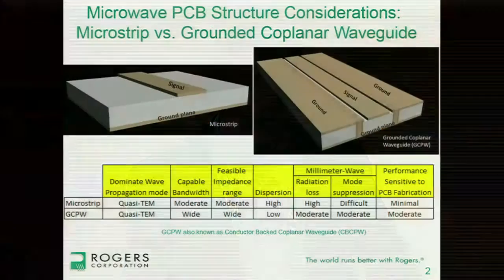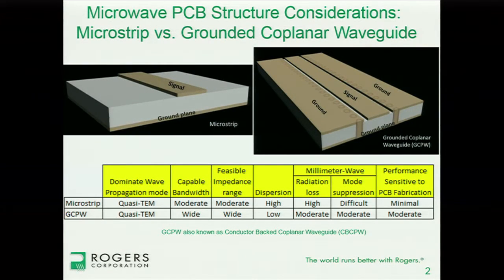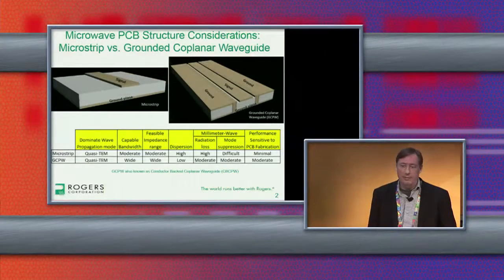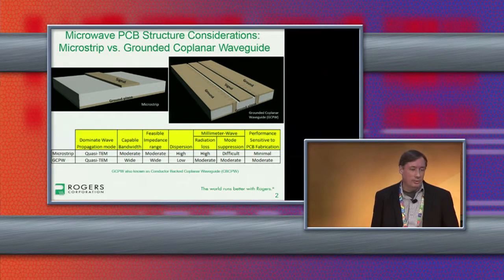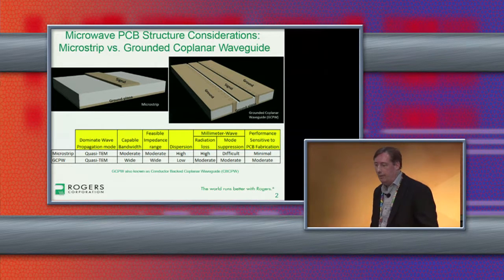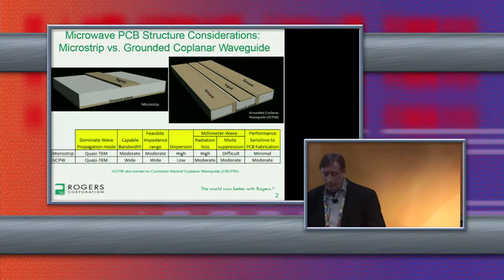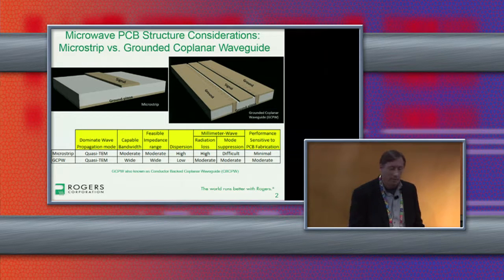To begin with, I'll go through a brief introduction of these two different structures. They are a PCB-based type of construction — PCB being printed circuit board. Microstrip, as you're probably pretty aware, is just a simple signal conductor over a ground plane. The grounded coplanar waveguide is also a two copper layer circuit with a ground plane on the bottom, and on the top layer it is a coplanar arrangement of ground-signal-ground. The grounds on the top layer are tied to the bottom ground by plated through-hole vias.